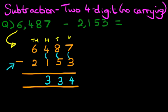And lastly, the thousands column. 6 minus 2. 6 minus 2. That's right. The answer is 4.